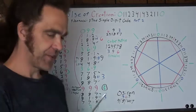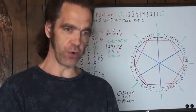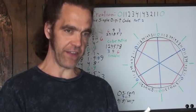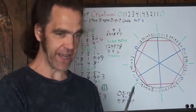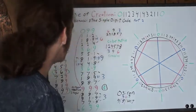This is the Fibonacci sequence telling you the single digit code is valid. And this is also the single digit code telling you that Fibonacci is valid, each validating the other. It's absolutely amazing.